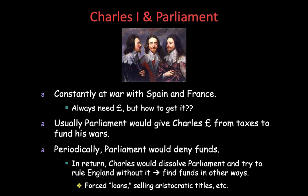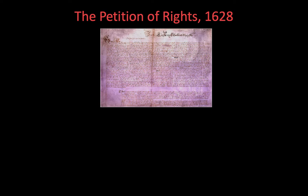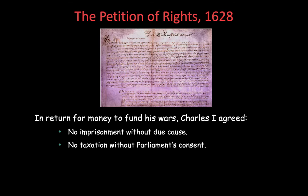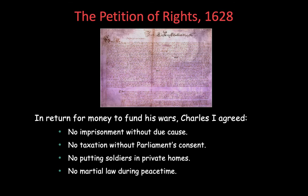Charles does this to get money to act however he wants without Parliament's say. He will also throw his enemies in jail without a trial — a direct contradiction of the Magna Carta. He's finally forced to call Parliament in 1628 because he desperately needs money to raise taxes and fund his wars. Parliament says: we'll give you money, but you have to agree to the Petition of Rights.